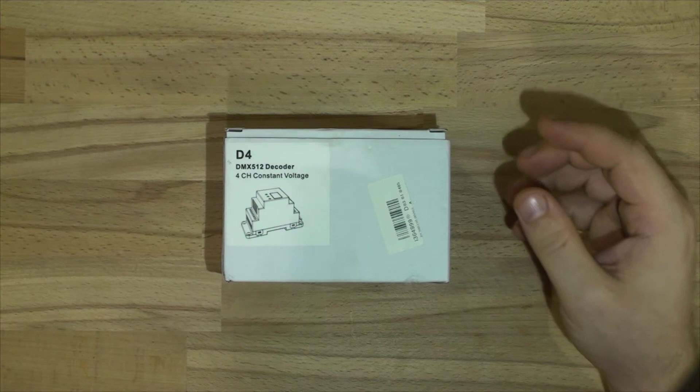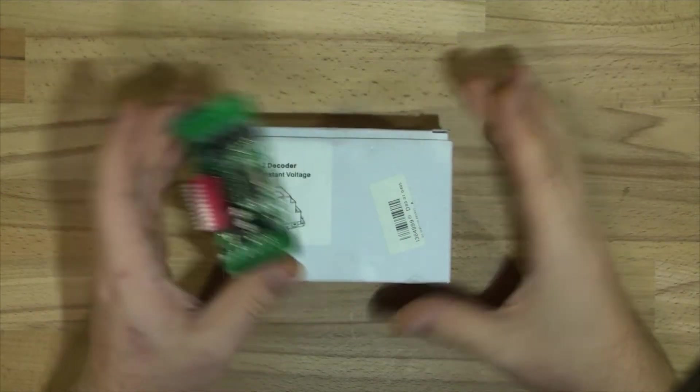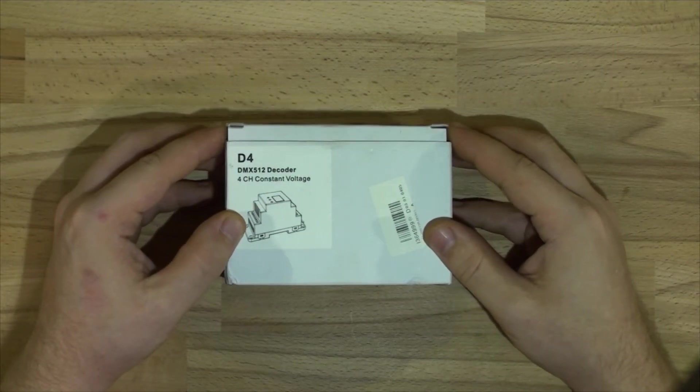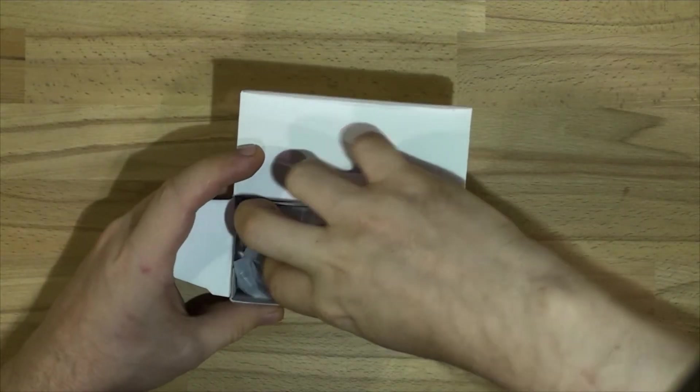Sometimes you'd like to do DMX lighting for your house and you'd be buying something like this and making a box for it and mounting it somewhere. But I came across this DMX512 decoder four channel dimmer and it is DIN rail mountable.